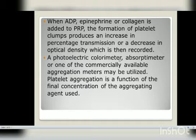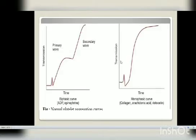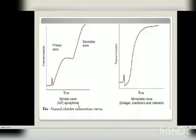A photoelectric colorimeter or commercially available aggregation meter may be utilized. Platelet aggregation is a function of the final concentration of the aggregating agent used. There are two types of aggregation curves: biphasic curves, which show a primary and secondary wave — exhibited by ADP and epinephrine — and monophasic curves, which show only one wave — exhibited by collagen, arachidonic acid, and ristocetin.